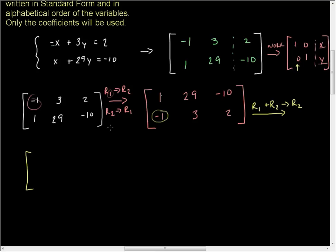My result is: I'm adding row 1 and 2, but putting the result in row 2. So row 1 does not change. It's just 1, 29, and negative 10. This is a good habit to get into. What is 1 plus negative 1? It's 0. What's 29 plus 3? It's 32. What is negative 10 plus 2? Negative 8.